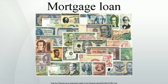Mortgage payments, which are typically made monthly, contain a capital repayment of the principal and an interest element. The amount of capital included in each payment varies throughout the term of the mortgage. In the early years the repayments are largely interest and a small part capital. Towards the end of the mortgage the payments are mostly capital and a smaller portion interest. In this way the payment amount determined at outset is calculated to ensure the loan is repaid at a specified date in the future.